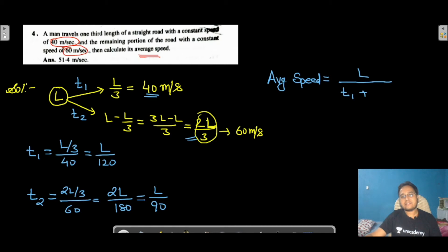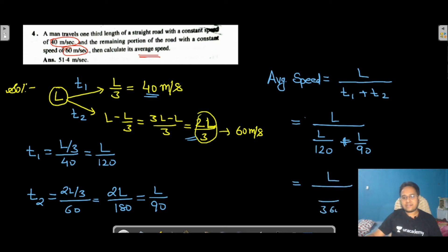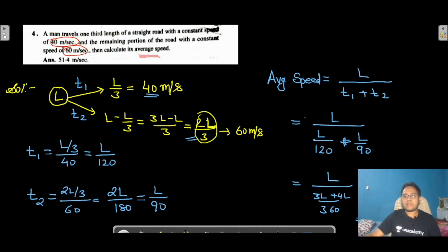Average speed = total distance / (T1 + T2) = L / (L/120 + L/90). LCM of 120 and 90 is 360: L/120 = 3L/360 and L/90 = 4L/360, so T1 + T2 = 7L/360. Therefore average speed = L / (7L/360) = 360/7 ≈ 51.4 m/s. So the final answer for Question 4 is approximately 51.4 m/s.